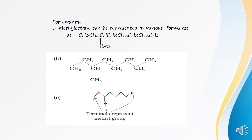How to count carbons in the bond line formula: carbon number one, two, three, four, five, six, seven, eight — eight carbon atoms total. On the third carbon atom there is a methyl group. On third carbon, there is one dash, and the terminal end of that dash represents a methyl group, so a CH₃ group is attached on the third carbon atom. Also, on both ends of the compound, CH₃ groups are present. This is how we represent a compound using bond line formula.